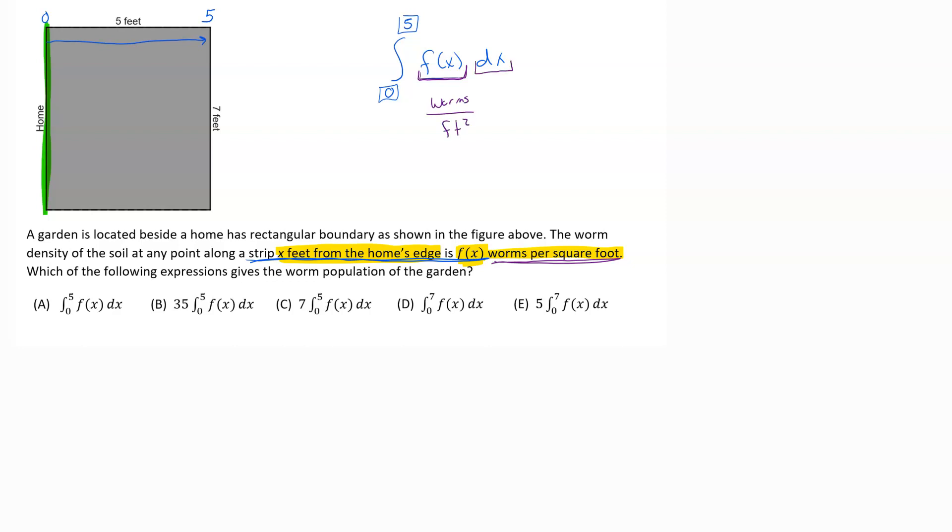Then the dx, the units of x are feet, so we would be multiplying by feet. If we just left it like this, I've got feet on top and feet squared on bottom. Those feet would cancel out, and I'm left with worms per foot, which is not what I want.